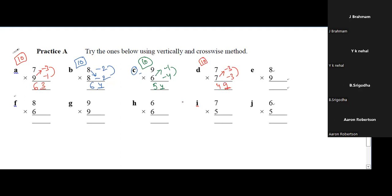Next question: base is 10, first number minus 4, second number also minus 4. Crosswise: 6 minus 4 is 2. Product of 4 and 4 is 16. We need only one digit but got two, so carry over 1. Answer is 36.